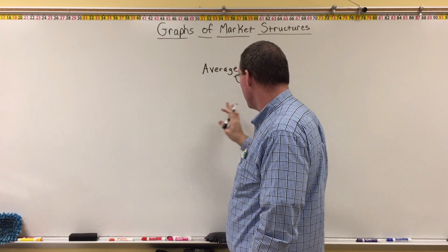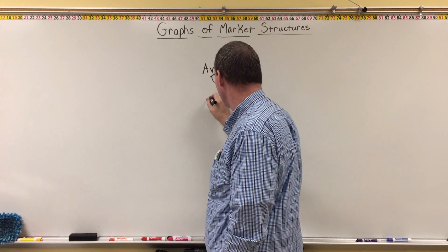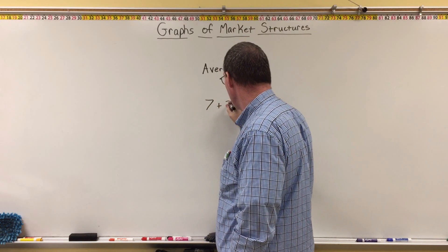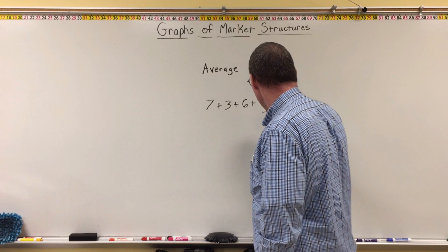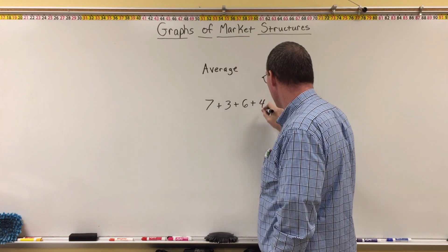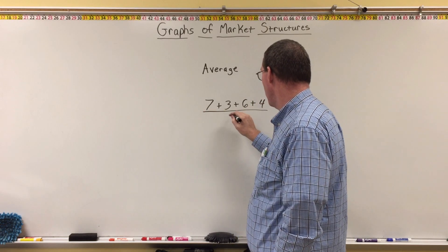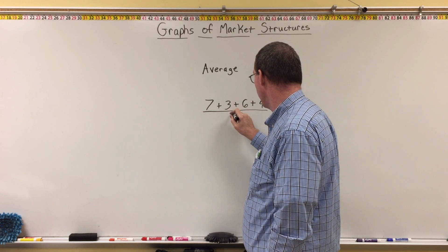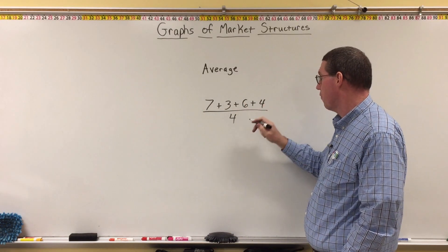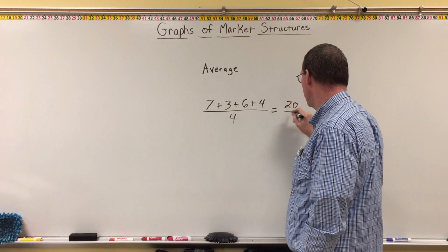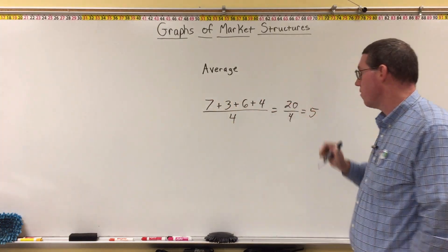An average is when you take a bunch of numbers and divide by however many numbers you have. So if you have 7, 3, 6, and 4 — that's 4 numbers — we're going to divide by 4. So 7 plus 3 is 10, plus 6 is 16, plus 4 is 20. So 20 divided by 4 means the average of these 4 numbers is 5.